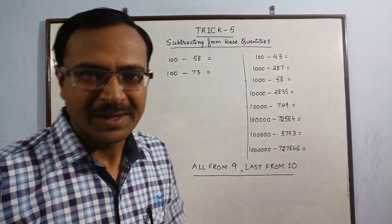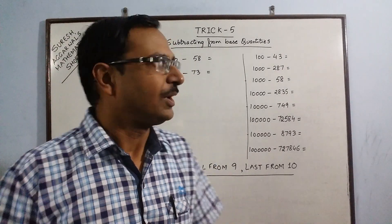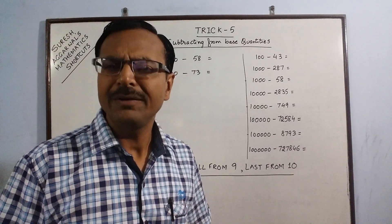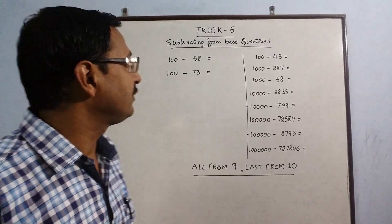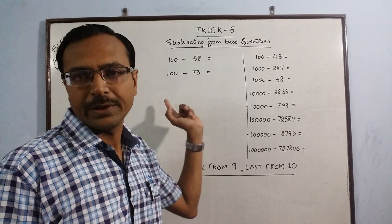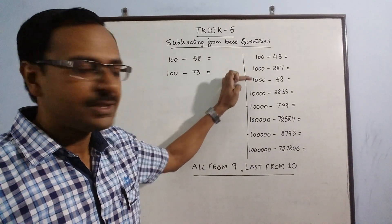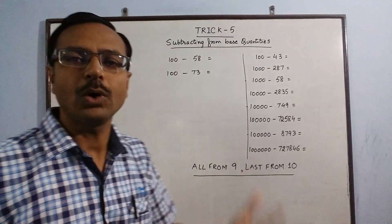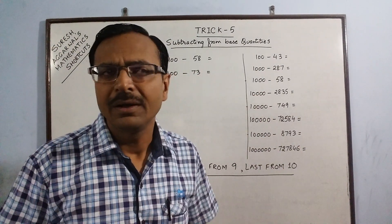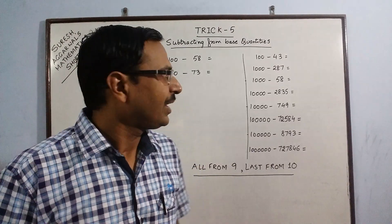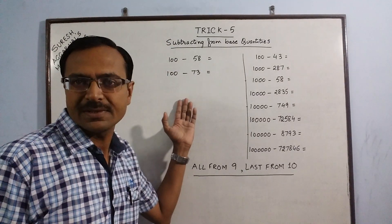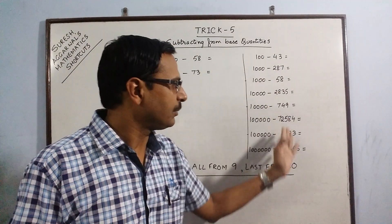Hello students, I am back with one more trick of Mathematic Shortcuts in which today we are going to learn a very simple trick — we will see how we subtract some numbers from base quantities like 100, 1000, 10000, and so on. Believe it or not, this subtraction can be done in about one second with 100% accuracy. Let me demonstrate one or two examples, after which we come to the practice examples.